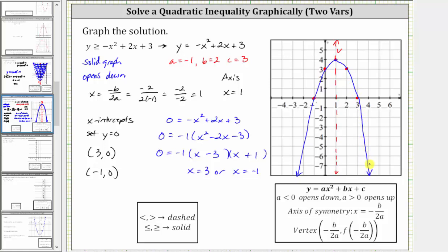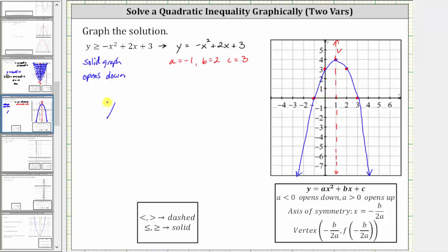For the last step, we need to determine whether we shade inside the parabola or outside the parabola based upon the original inequality. The original inequality is y is greater than or equal to negative x squared plus two x plus three. Because we have y is greater than negative x squared plus two x plus three, we shade above the vertex, or in this case outside the parabola, which is this region here.